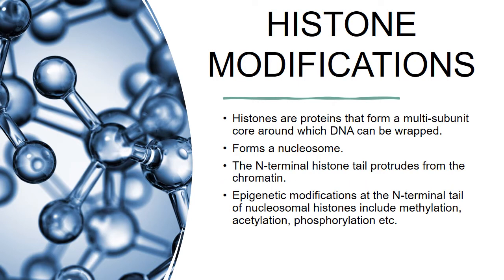The second process is called histone modification. Histones are proteins that form a multi-subunit core around which DNA can be wrapped, and once tightly compacted, it forms what is known as a nucleosome. The N-terminal histone tail protrudes from the chromatin, and this is the site at which several epigenetic modifications occur, just because it's an unstructured N-terminal tail of histone protein, so it's more accessible.